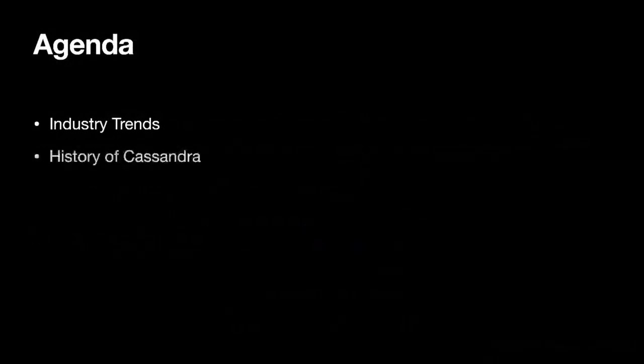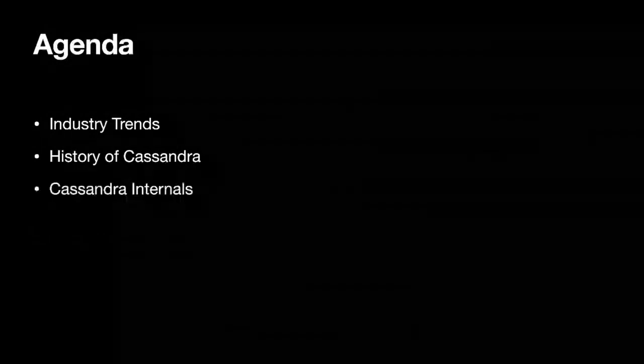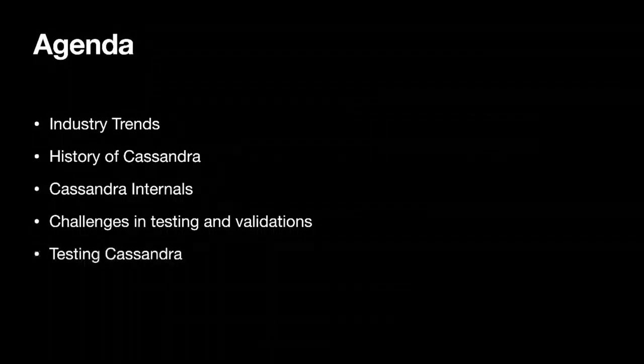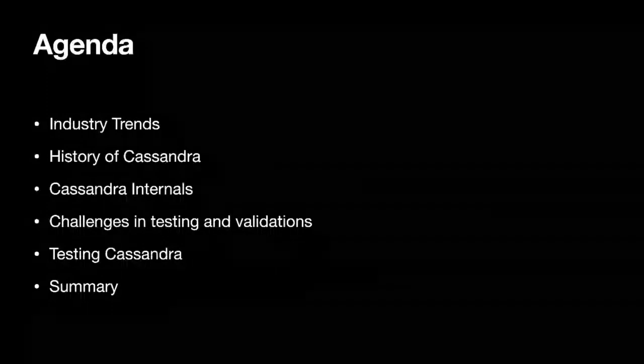I'm going to talk about some of the industry trends first, then a little bit about the history and architecture of Cassandra, Cassandra's internals, challenges in testing and validation, and finally what makes testing Cassandra very hard — and a summary. For those of you not familiar, 4.0 is one of the first releases that has been in the works for over two years. I want to add context about how 4.0 is being built and what we're doing to ensure this is a good, stable, bug-free release.